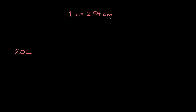We need to find a way to get from liters to centimeters, because liters and centimeters are both metric units. Then we can get from centimeters to inches using our conversion, and inches are imperial units. A conversion you should know is that 1 liter is equal to 1,000 centimeters cubed. So here we can get from liters to centimeters, and then from centimeters to inches.